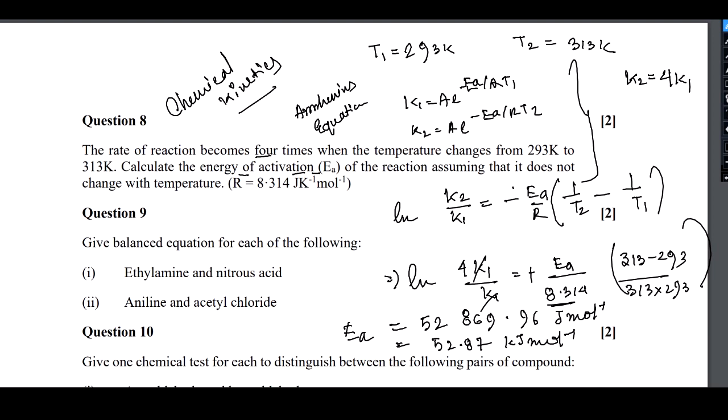Since we used 8.314 Joules per mole per Kelvin, Kelvin cancels out and we get it in Joules per mole, or 52.87 kilojoules per mole. That will be the activation energy using Arrhenius equation. This is the solution of question number 8. Now I'm going for question number 9.